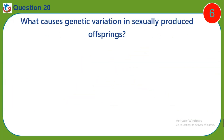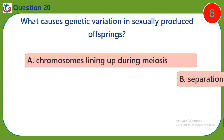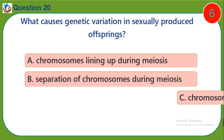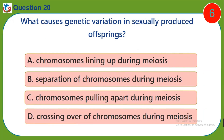Question twenty: What causes genetic variation in sexually produced offspring? a) chromosomes lining up during meiosis, b) separation of chromosomes during meiosis, c) chromosomes pulling apart during meiosis, d) crossing over of chromosomes during meiosis.